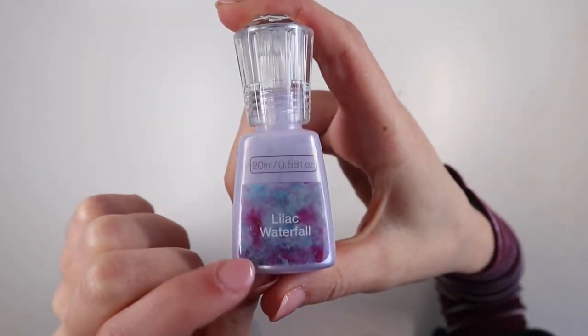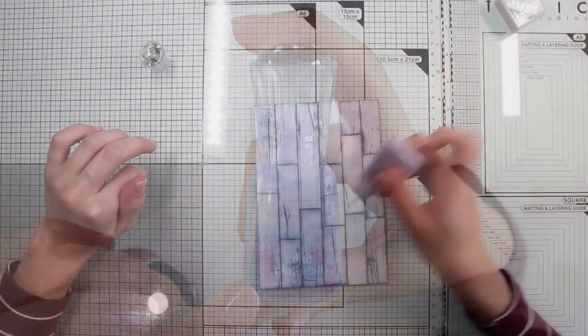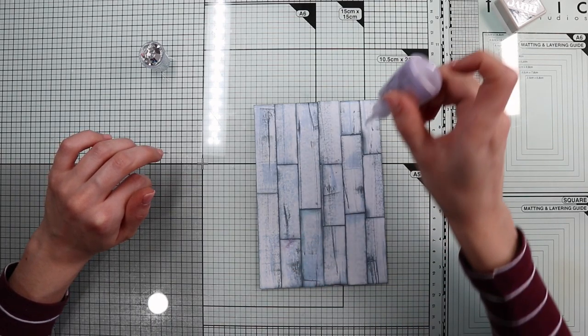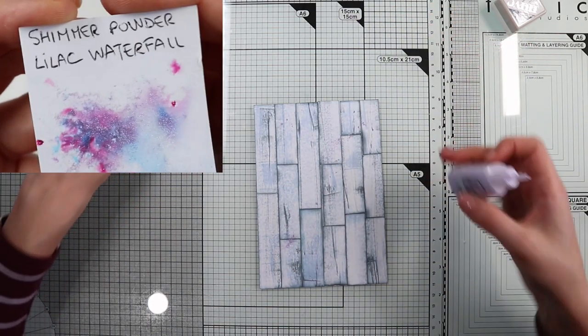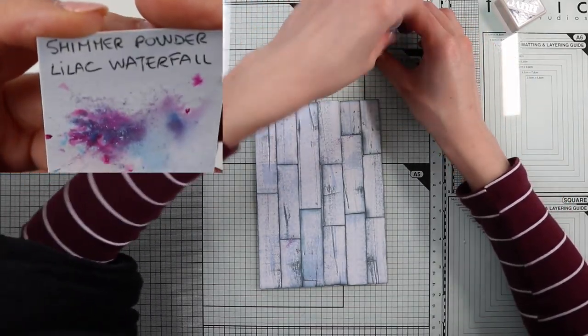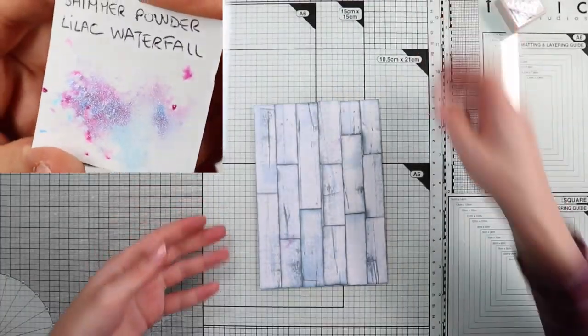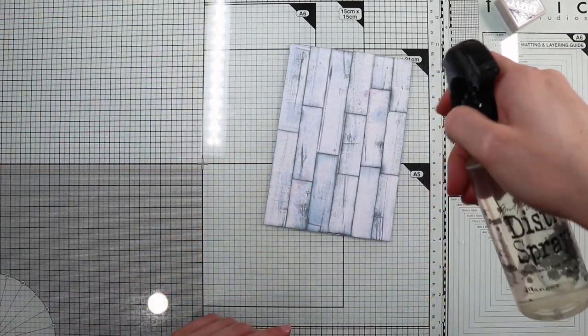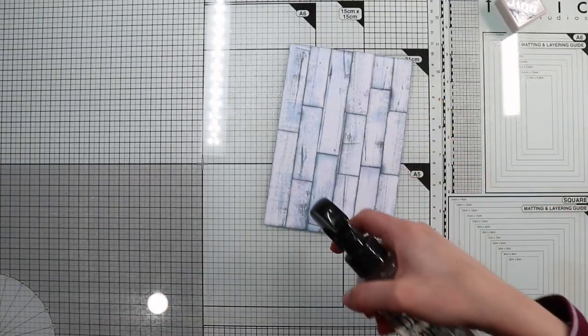First, I'm going to put a few sparkles of Nouveau Shimmer Powder, a powder with pigments of various colors—in this case a mix of magenta, purple, and blue—with a metallic finish, very bright. To activate the pigments, you can use just water.